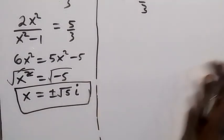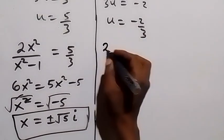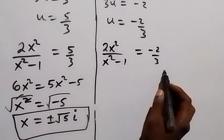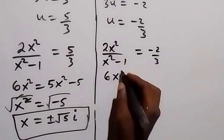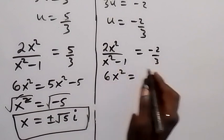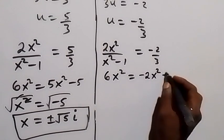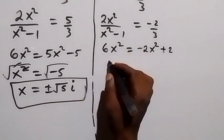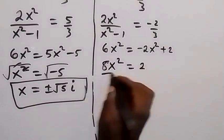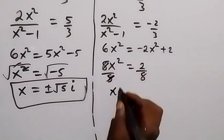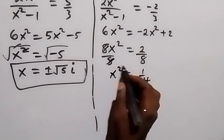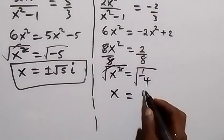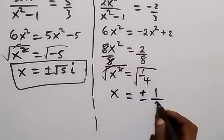For the second case, u = 2x²/(x²-1) = -2/3. Cross multiplying: 3 × 2x² = -2(x²-1), giving 6x² = -2x² + 2. So 6x² + 2x² = 2, that's 8x² = 2, giving x² = 1/4. Taking the square root of both sides: x = ±1/2.